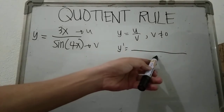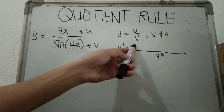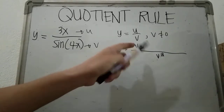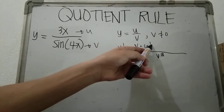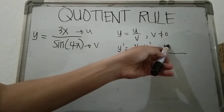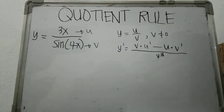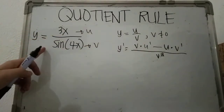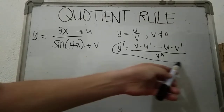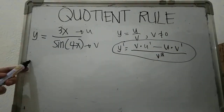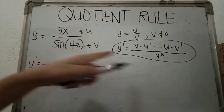The derivative formula is: copy the denominator v in the denominator part and square it; on the numerator, copy the denominator v and multiply it with the derivative of the numerator, which is u prime, minus copy your numerator u times the derivative of v, which is v prime. In finding the derivative of 3x over sine 4x, all we have to do is follow this process.